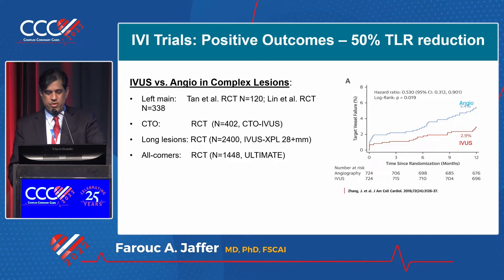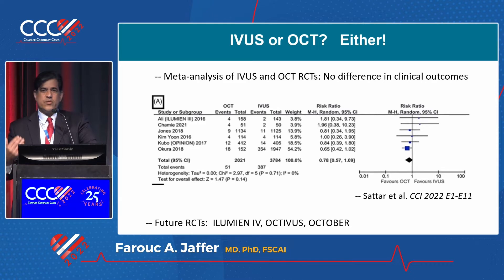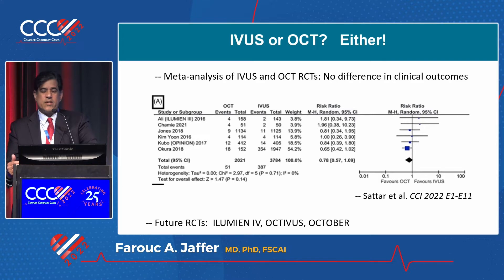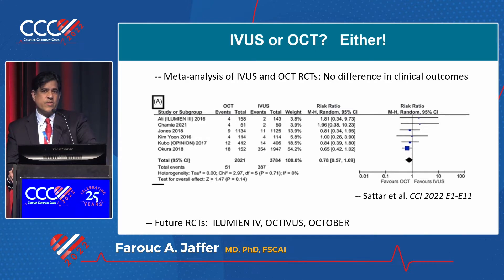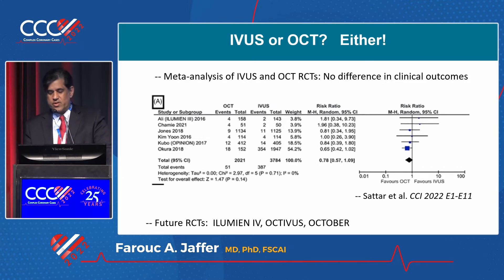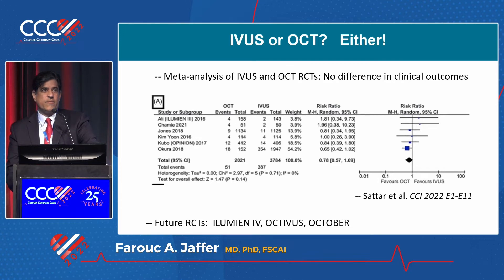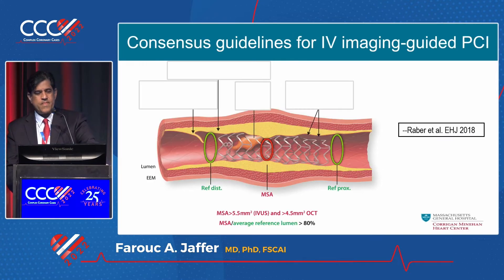Regarding IVUS versus OCT: for mechanisms of ACS, OCT is superior for looking at the lumen surface and mechanisms of restenosis and stent thrombosis. But for general stent expansion, PCI clinical outcomes, there really is no difference. A recent meta-analysis published in CCI, based on about seven randomized trials, showed no difference — maybe even slight trends towards OCT. The LUMEN-IV and OCTIVUS trials in October will be our next set of randomized data, hopefully providing class one indications for imaging in the guidelines.